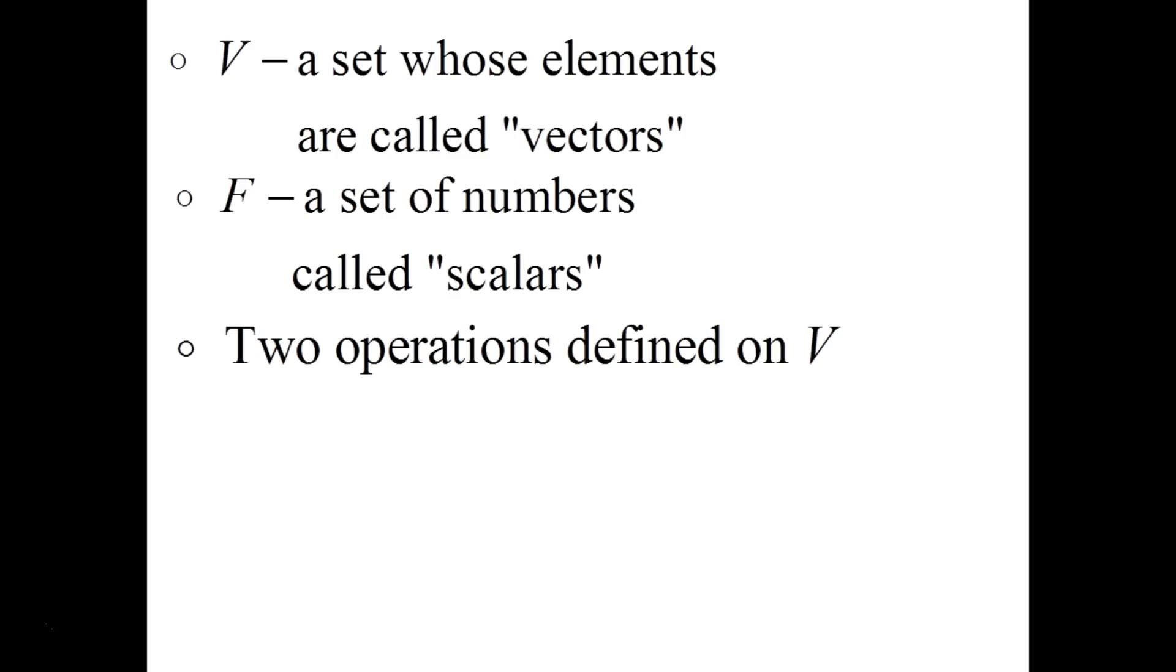So with these two sets what we do is we define two operations on the set V using F as well. First up is vector addition. If I take two vectors that are inside of the set V I have to talk about exactly how I go about adding those vectors. And then the second operation is called scalar multiplication. If I take a scalar, a number from set F, what does it mean to multiply that number by a vector from set V? We have to define these.